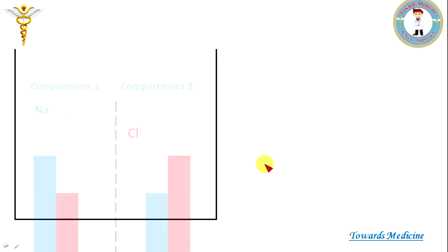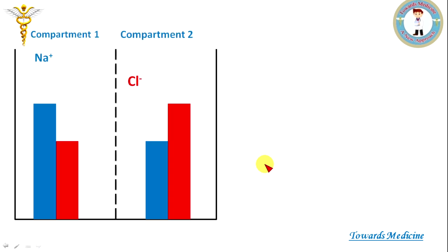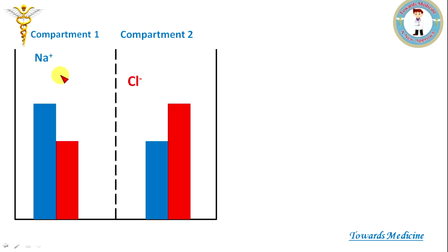Now we discuss what happens in the case of normal diffusion. There are two compartments separated by a semi-permeable membrane. In one compartment sodium is in higher concentration, while in the other compartment chlorine is in higher concentration.